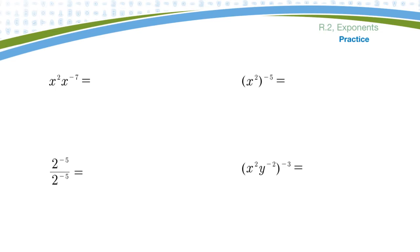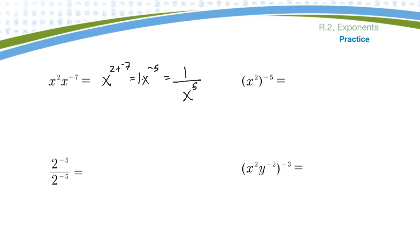Here are some questions you can try. Go ahead and pause the video, try these questions, then press play and we can look at them. This first one is the product rule: when you're multiplying common bases, you add their exponents. It would be two plus a negative seven, which is x to the two take away seven, which is negative five. Now this is like one times x to the minus five — we don't like negative exponents — so that would be one over x to the positive five.